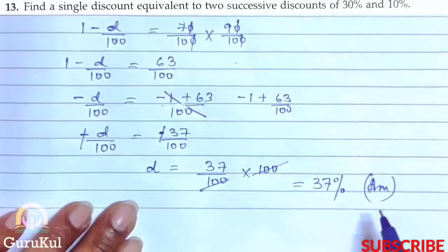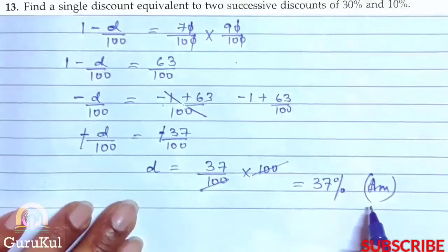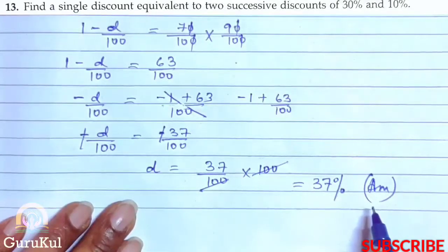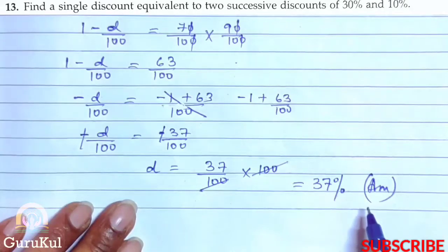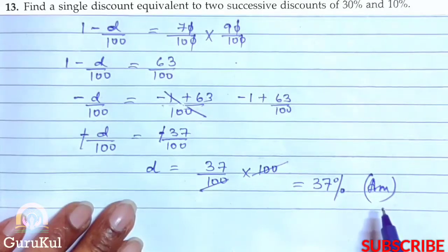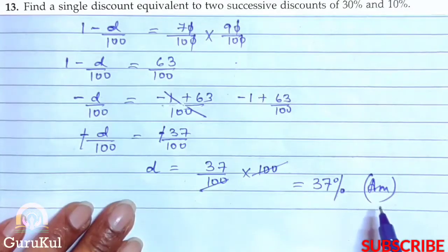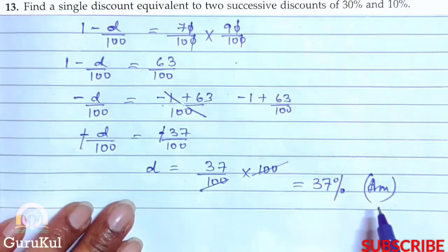This is the single discount which is equivalent to the two successive discounts of 30% and 10%. With this we come to the end of exercise 7.3. Please friends, don't forget to write down your comment about what you think of my videos.